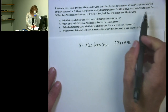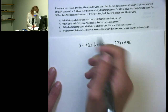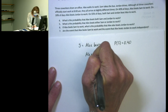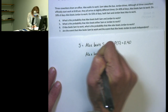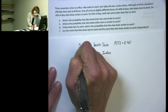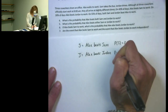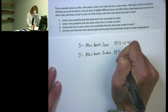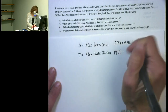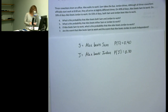I'm also told that on 30 percent of days, Alex beats Jordan to work. I'm going to call that event J, and that has probability 0.30.